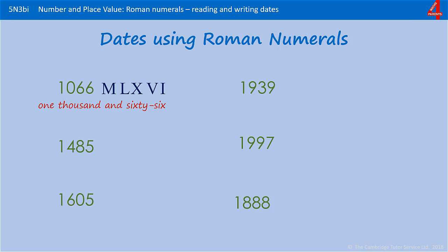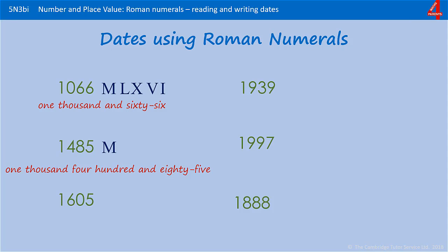1485 was the first Tudor monarch, Henry VII. This number is 1485. 1400 — remember that's 100 less than 500, so that's CD. 80 is 30 more than 50, and then 5.